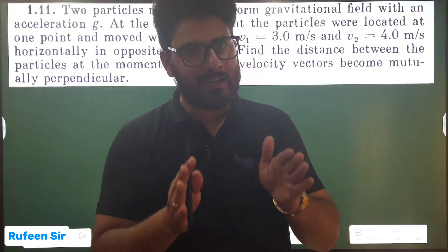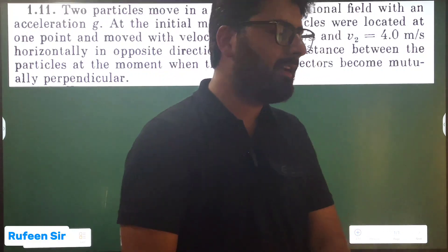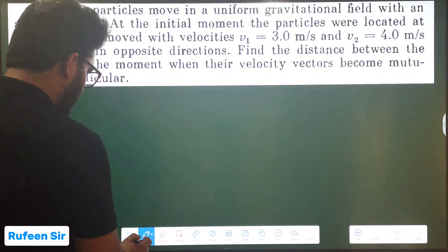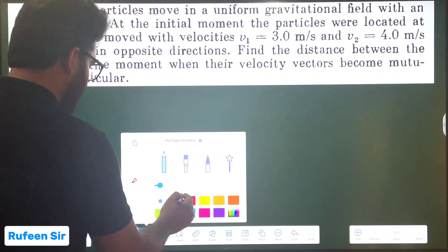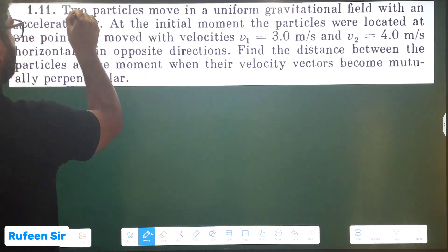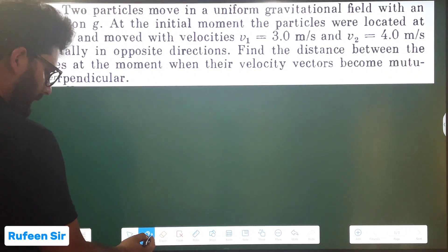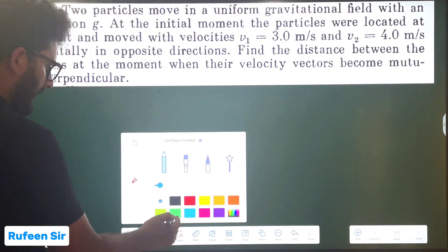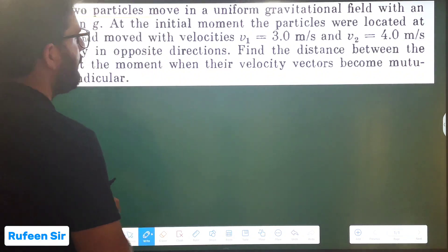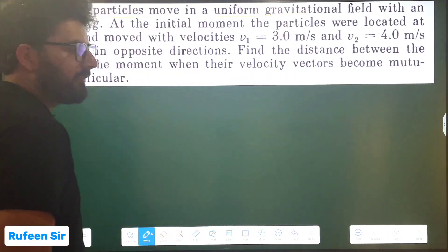Understand the first question — make a diagram, make a nice diagram, and then try to solve this question. Now, if you can see what this question states: there are two particles, two particles are actually moving.